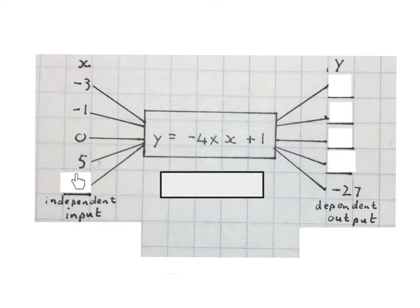On this side they call these numbers X, they're also called the input values, also called the independent variable. On this side we have a symbol Y, it's our output values, also called the dependent variable.